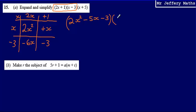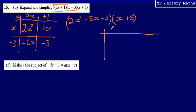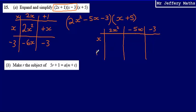Now I'm going to take that answer and I'm going to multiply it by (x + 5). Again, I'm going to use a grid to do this. Along the top I'm going to have 2x squared minus 5x minus 3, and I'm going to be multiplying that by (x + 5), working out each of these terms by multiplying them by each other.